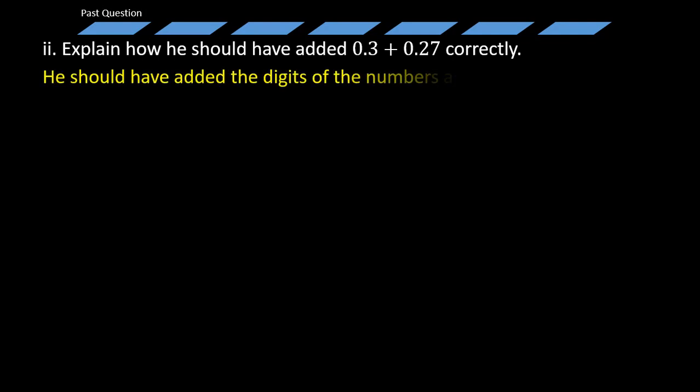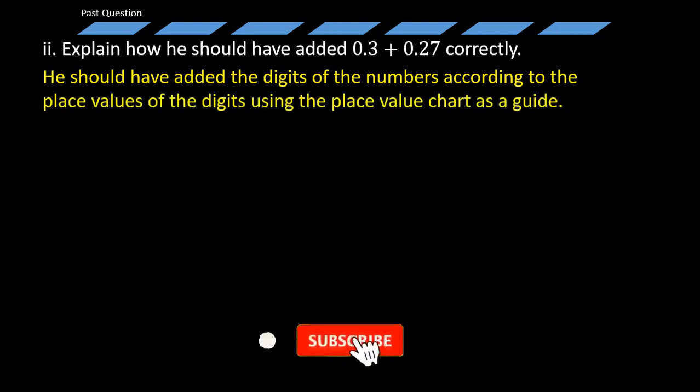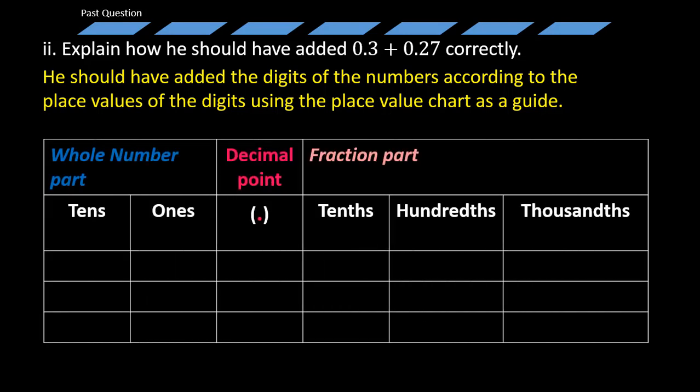Now, he should have added the digits of the numbers according to the place values of the digits using the place value chart as a guide. So let's introduce our place value chart again. And then for the number 0.3, you'll get to realize that the number 0 represents the whole number part. And that simply represents 0 ones. So introducing the 0 there, we can then proceed toward bringing our decimal point. Then the number here, 3, represents 3 out of 10. In other words, 3 tenths. So we simply also put that one down here.